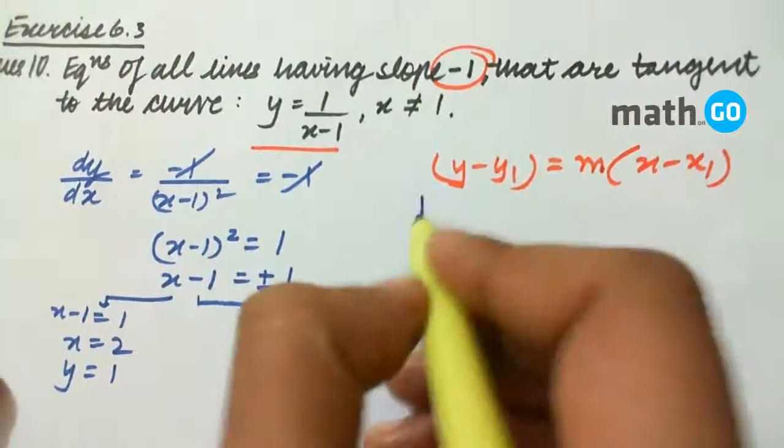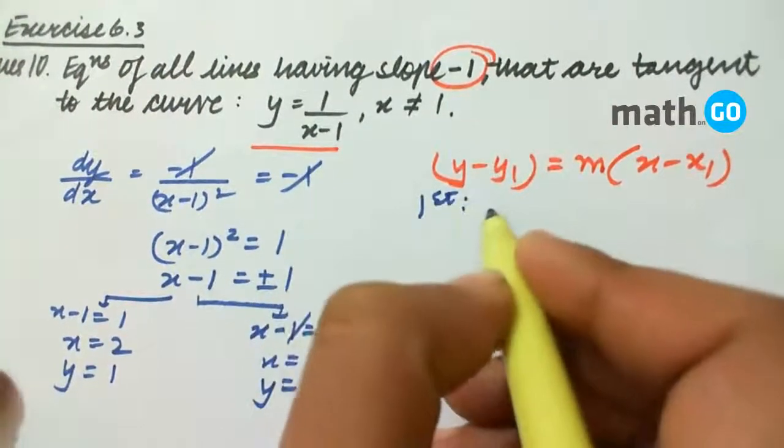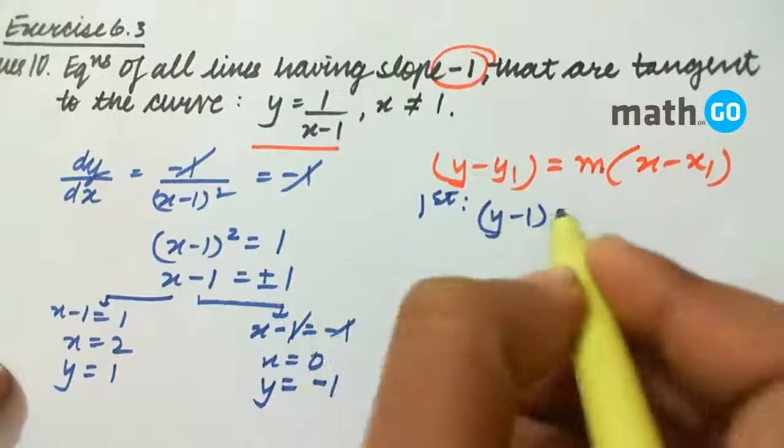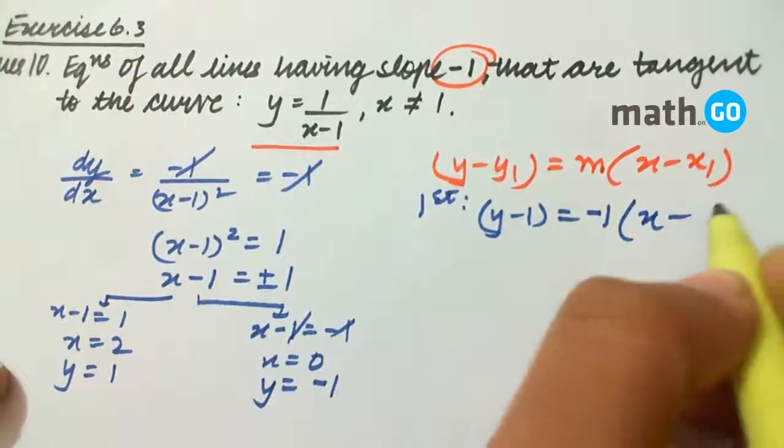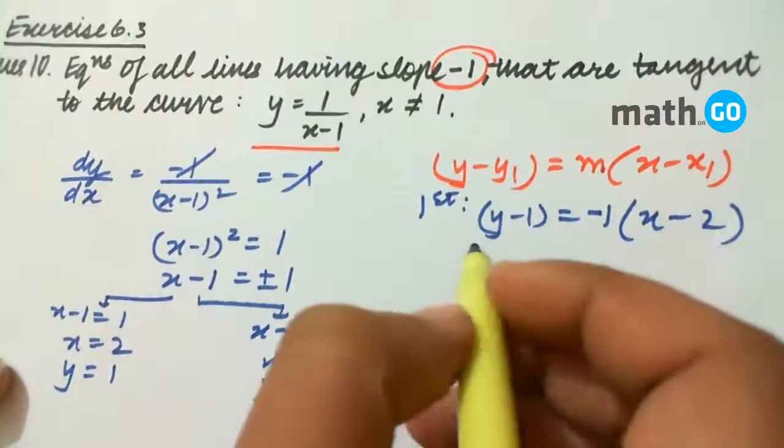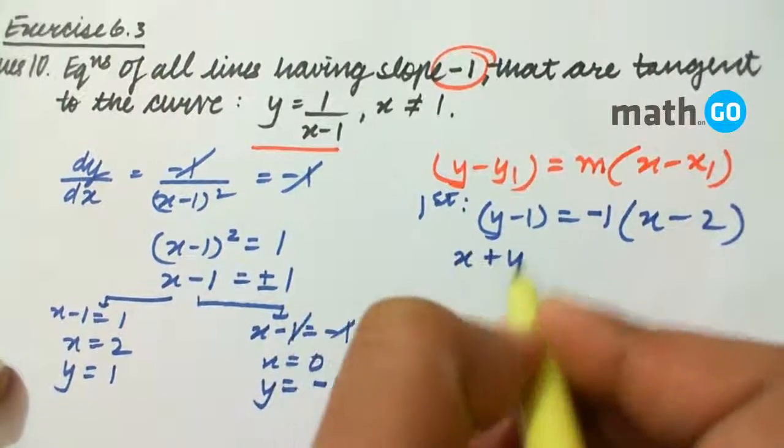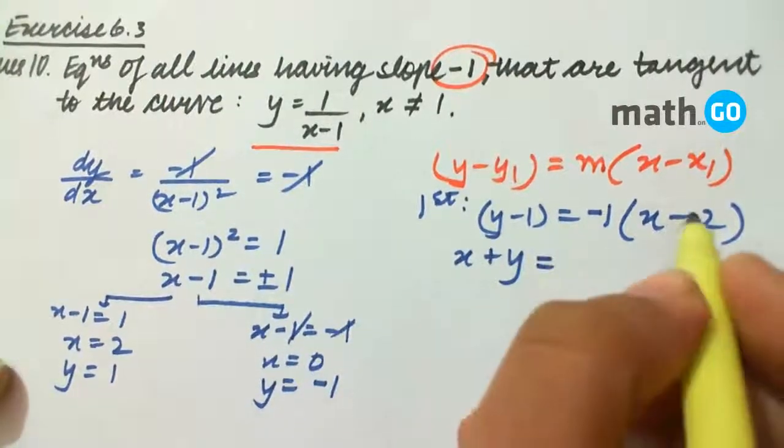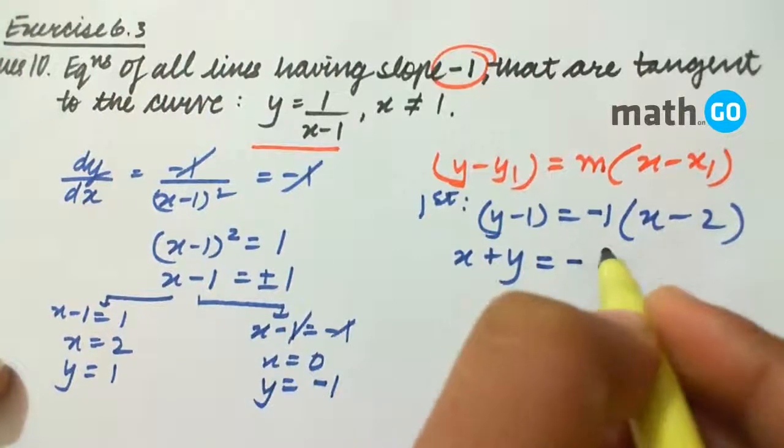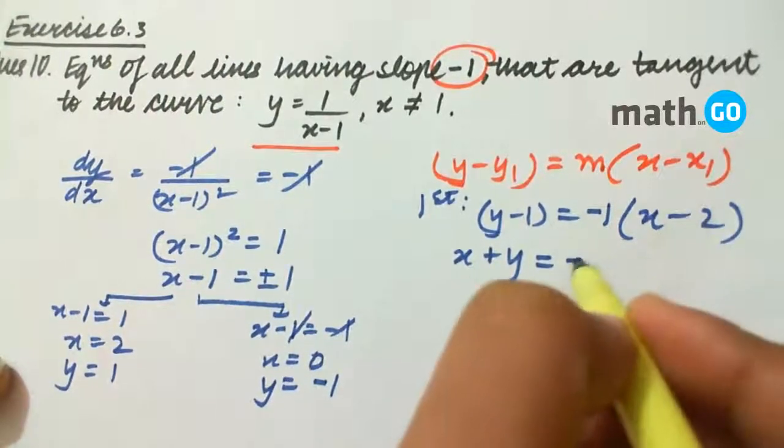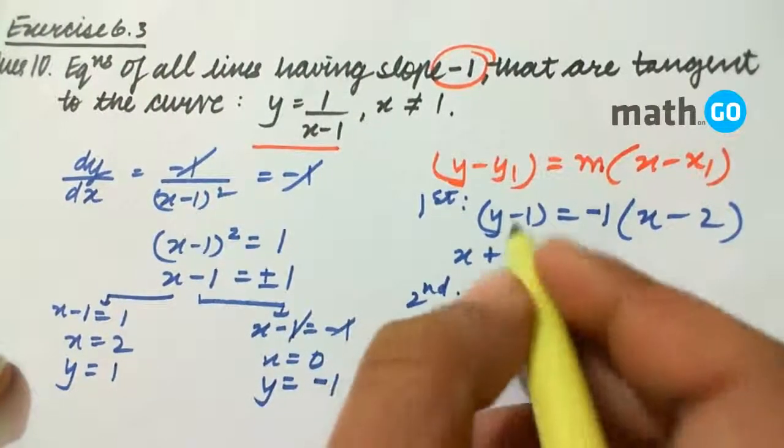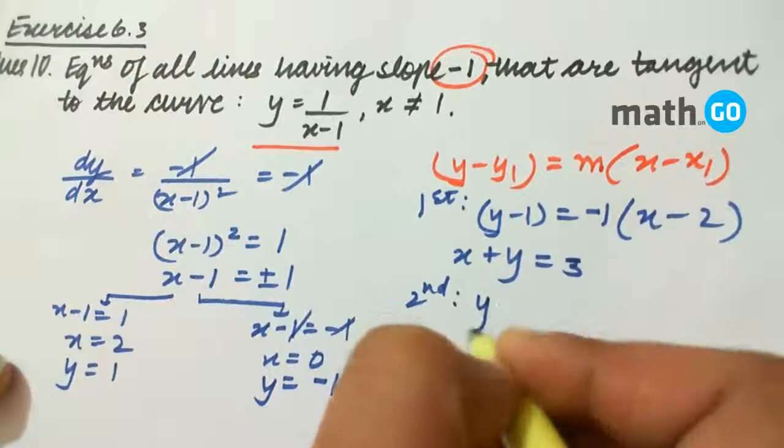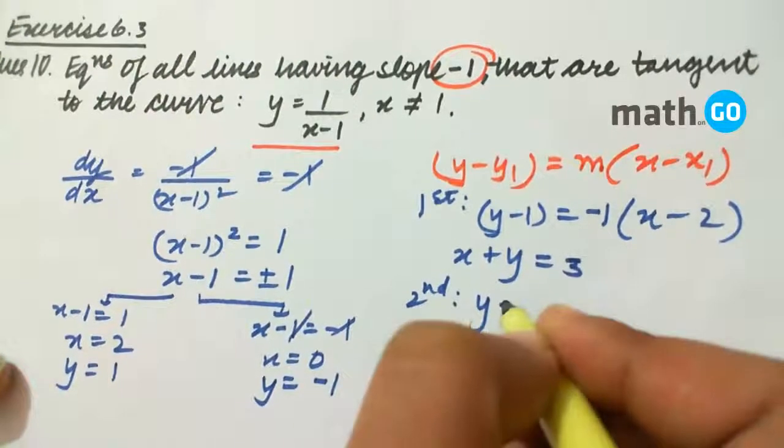For the first equation, y - 1 = -1(x - 2), giving the final equation x + y = 3. And for the second, it is y - (-1)...